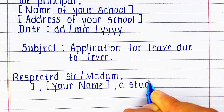Write your name, then your class and section. Next, on the left-hand side corner, take a signature from your parent and write the name of your parent under the signature.